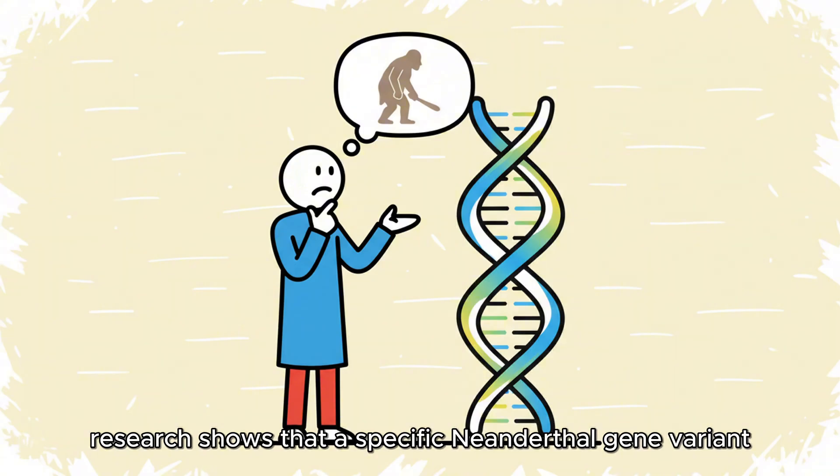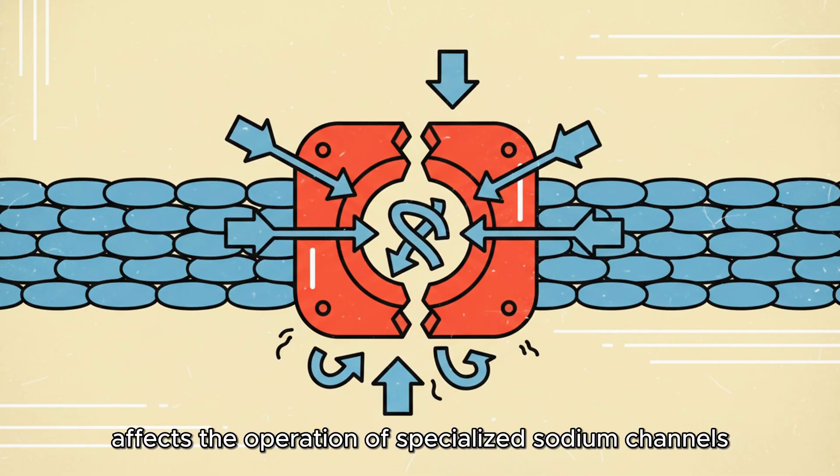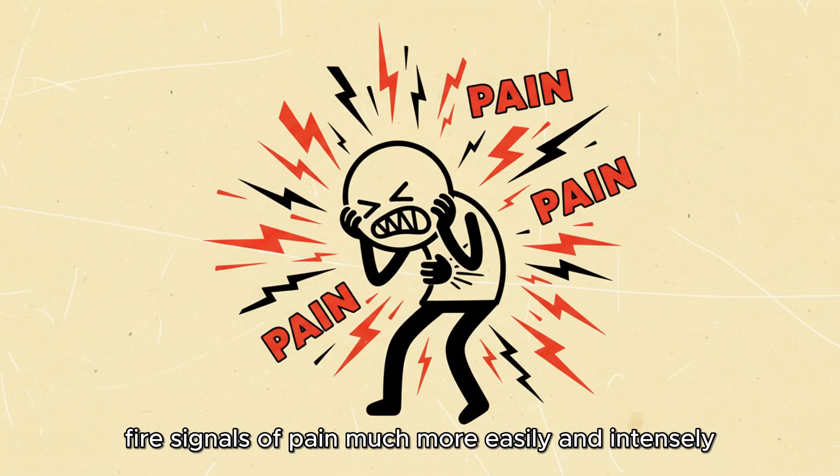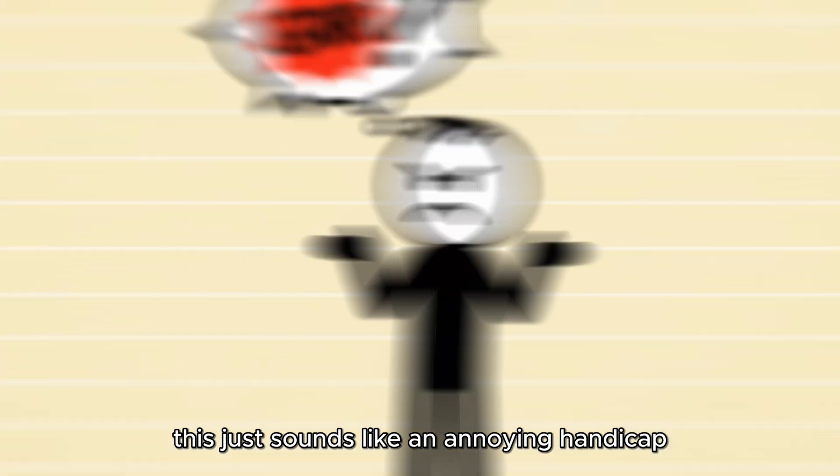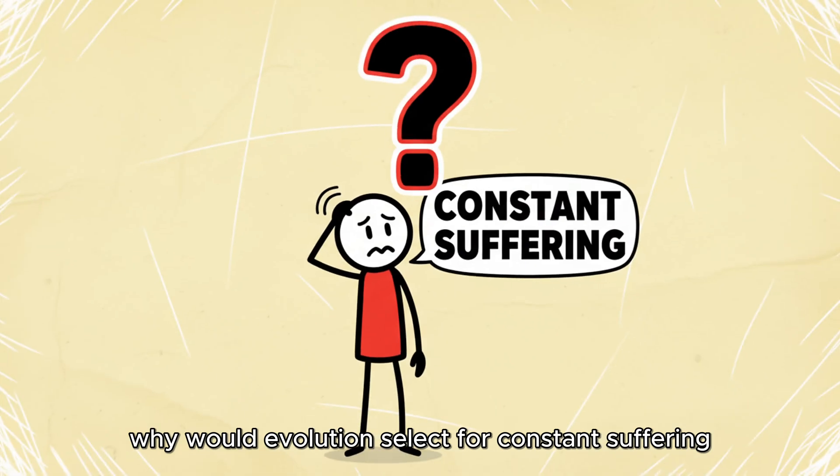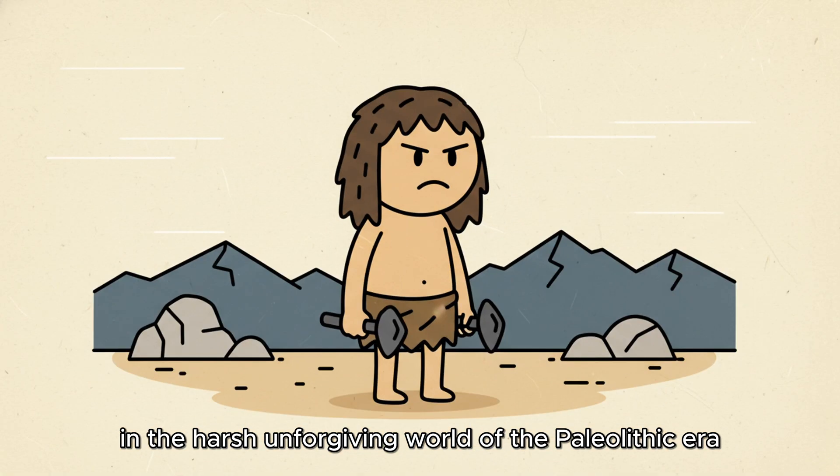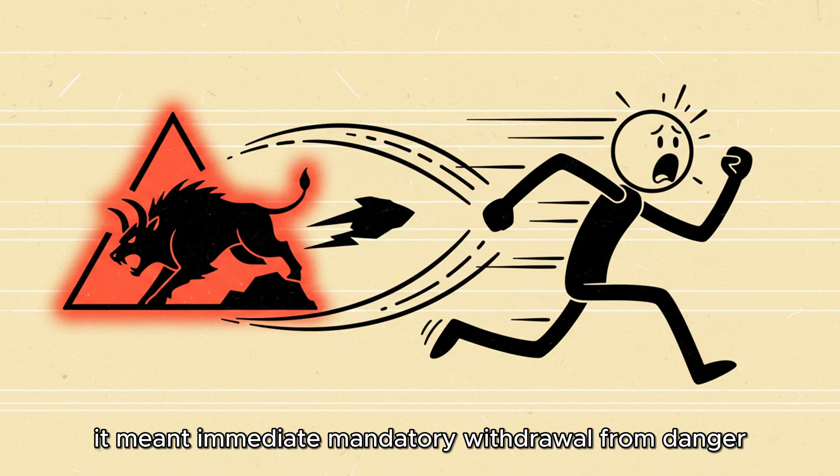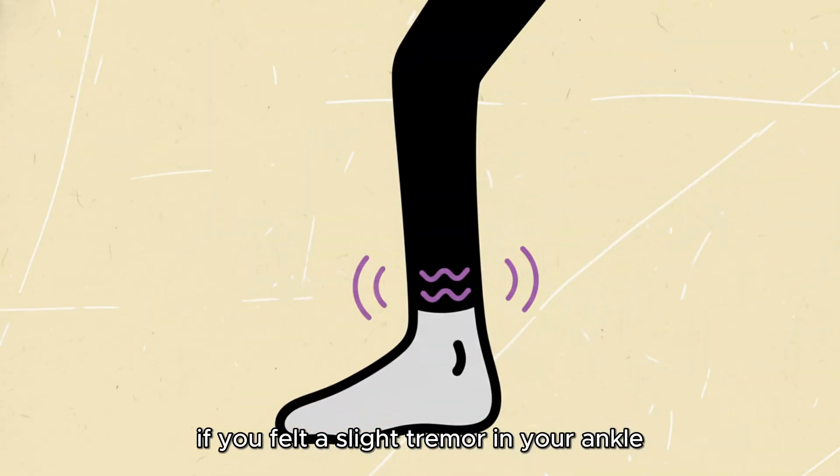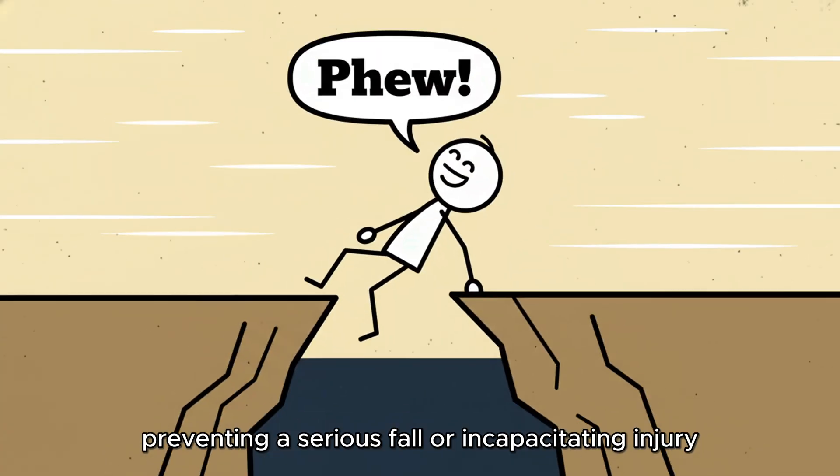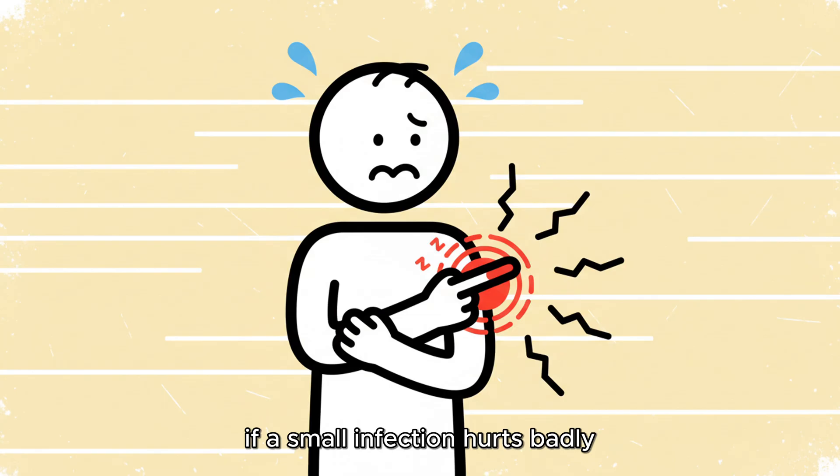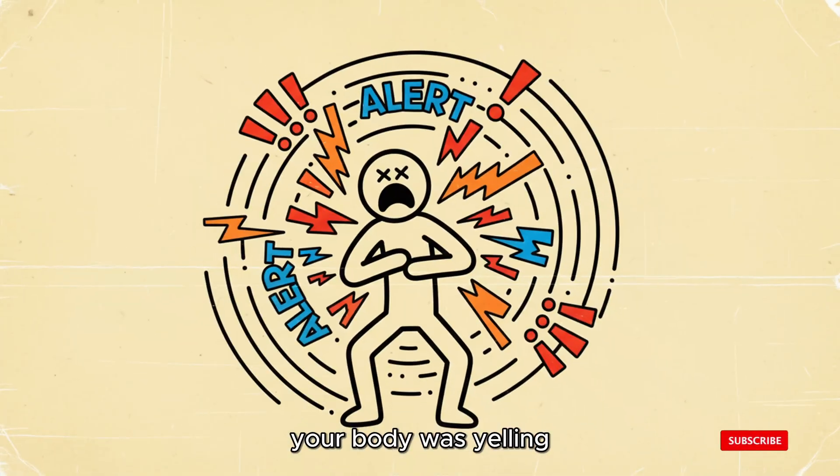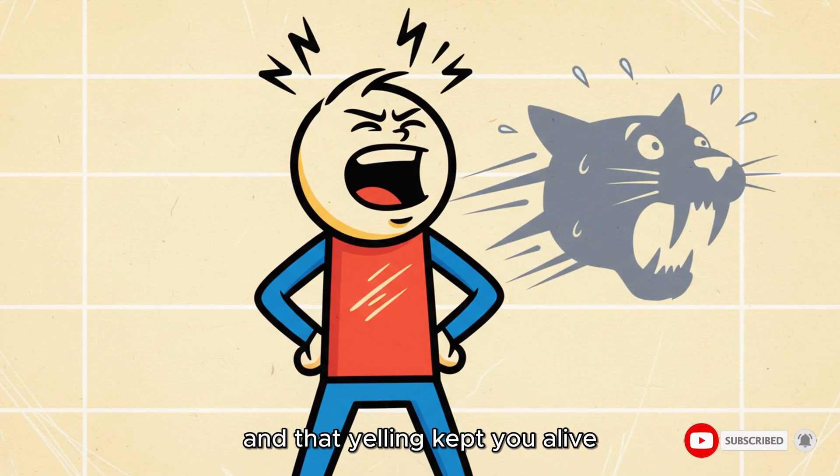Research shows that a specific Neanderthal gene variant affects the operation of specialized sodium channels in your nerve endings. Essentially, this gene makes your neurons fire signals of pain much more easily and intensely. For us modern humans, this just sounds like an annoying handicap. Why would evolution select for constant suffering? In the harsh, unforgiving world of the Paleolithic era, heightened sensitivity to pain was a critical survival mechanism. It meant immediate, mandatory withdrawal from danger. If you felt a slight tremor in your ankle, your ancient brain yelled, run, preventing a serious fall or incapacitating injury. If a small infection hurts badly, you would be motivated to clean it immediately, preventing deadly sepsis. Your body was yelling when everyone else's was merely whispering, and that yelling kept you alive.